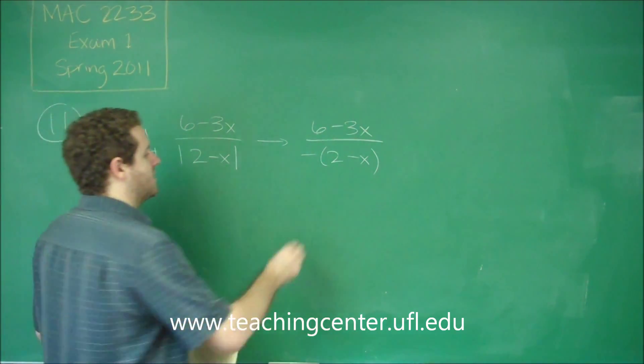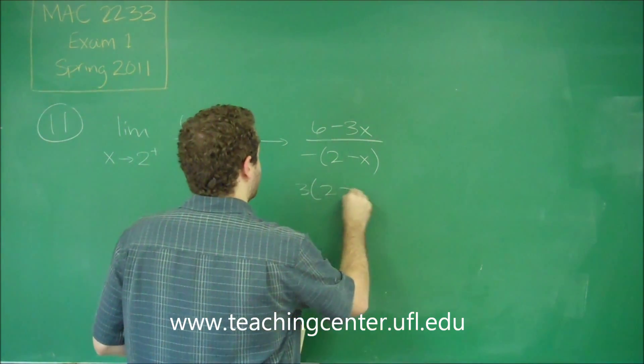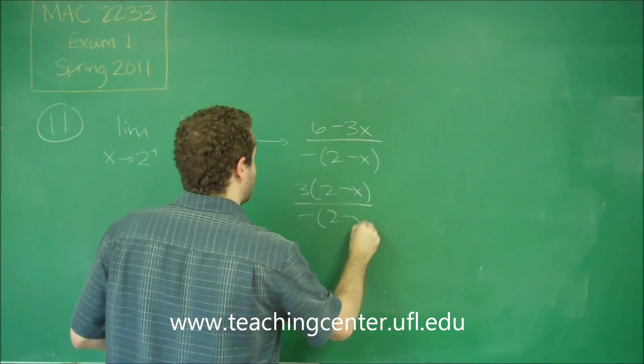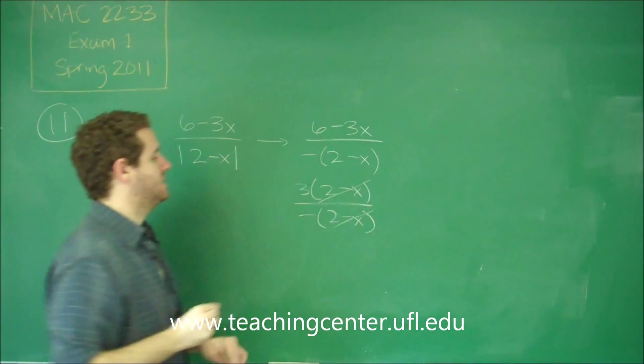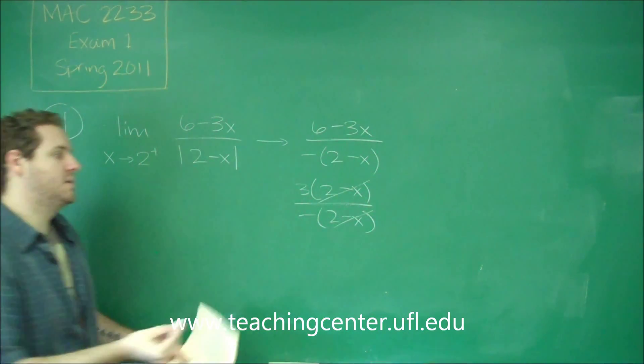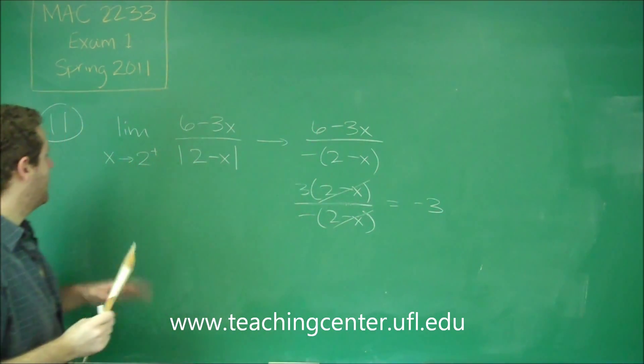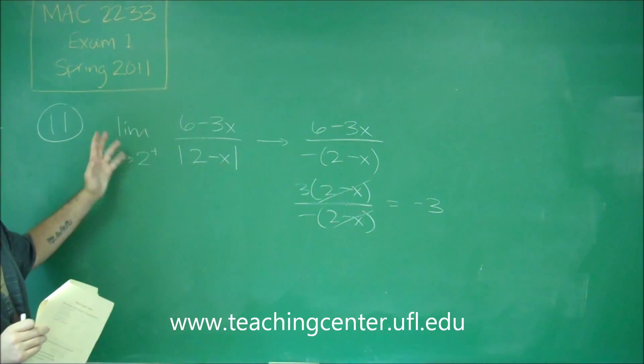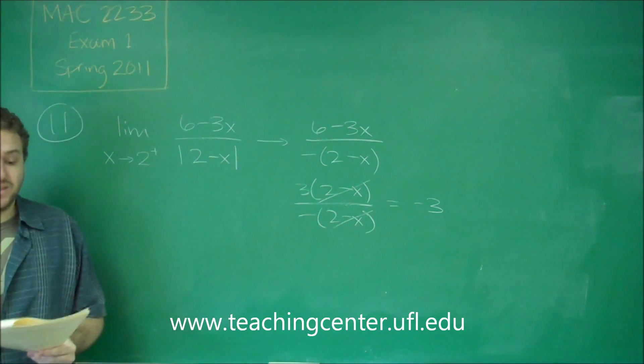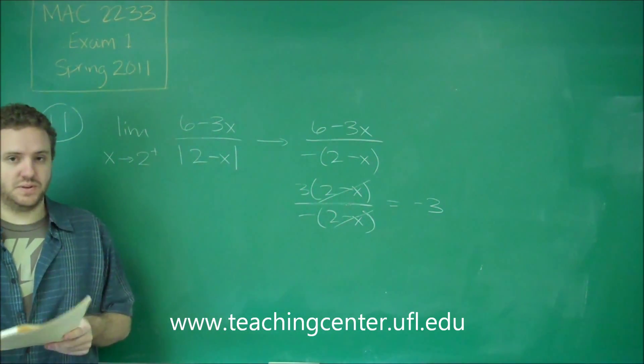You can see now you can factor 3 out of the top. And we get the 2 minus x's to cancel out completely. 3 divided by negative 1 is just negative 3. And now we don't even have an x to plug in this value for. So obviously then our answer is just negative 3, which is answer choice D.